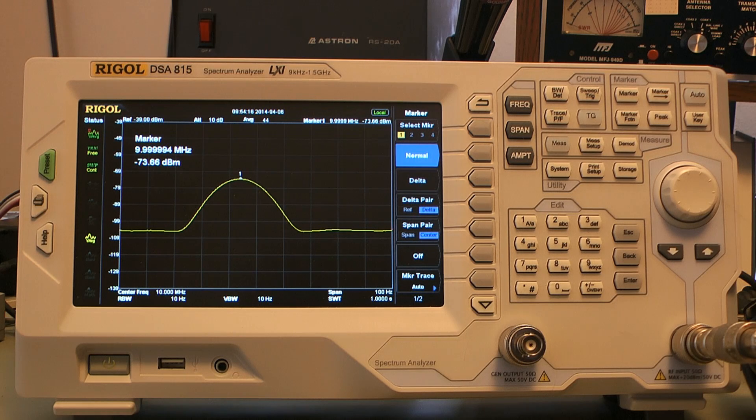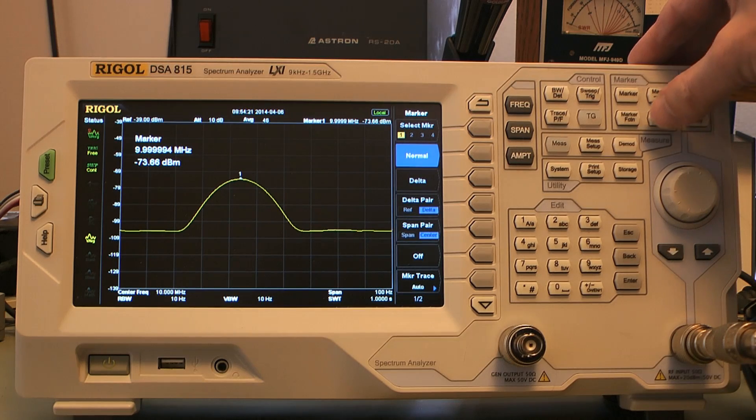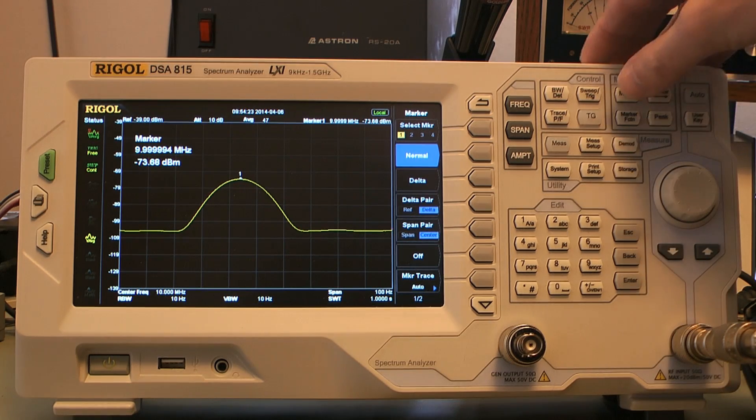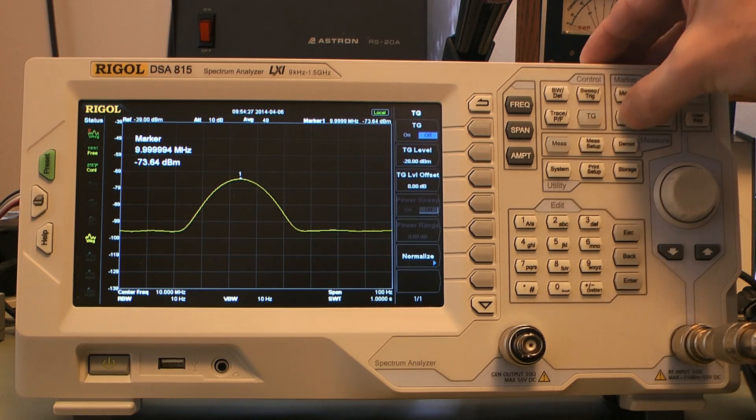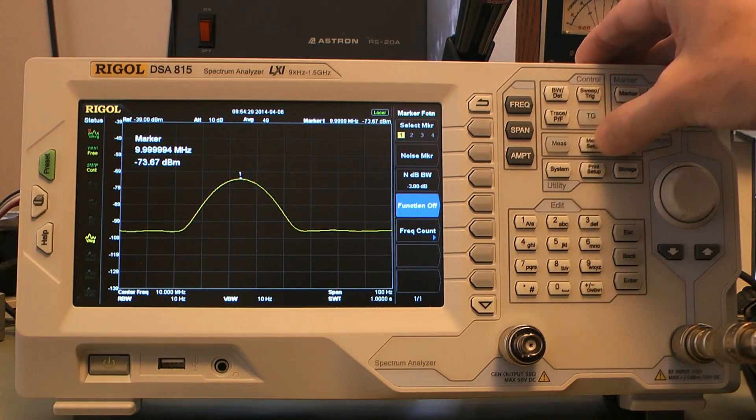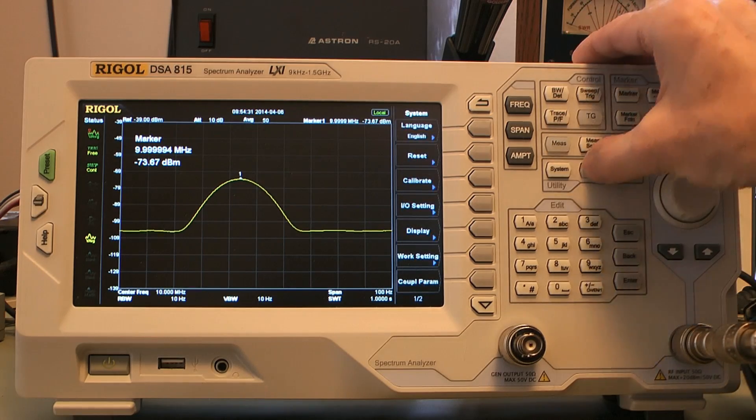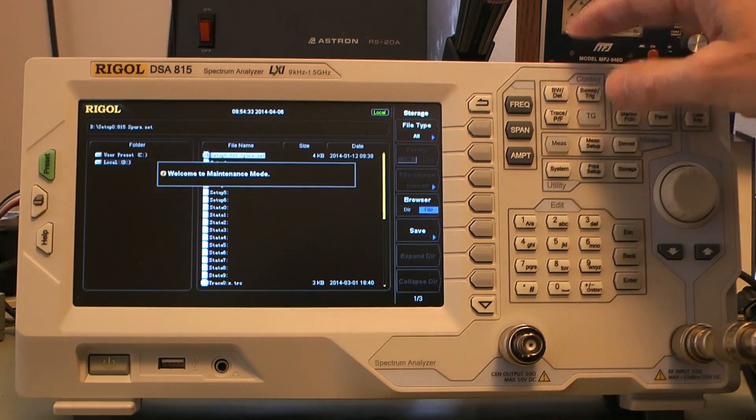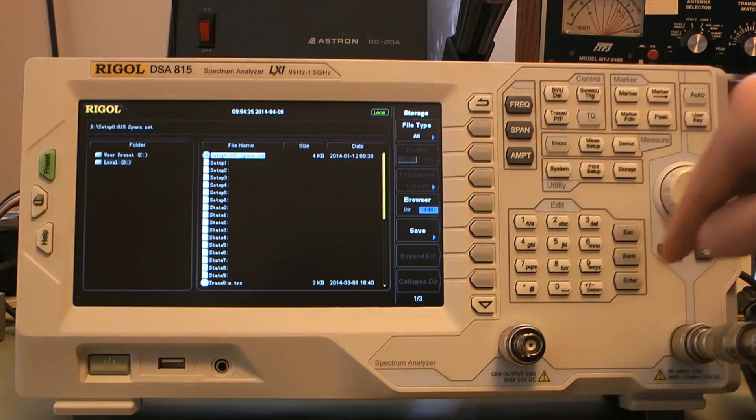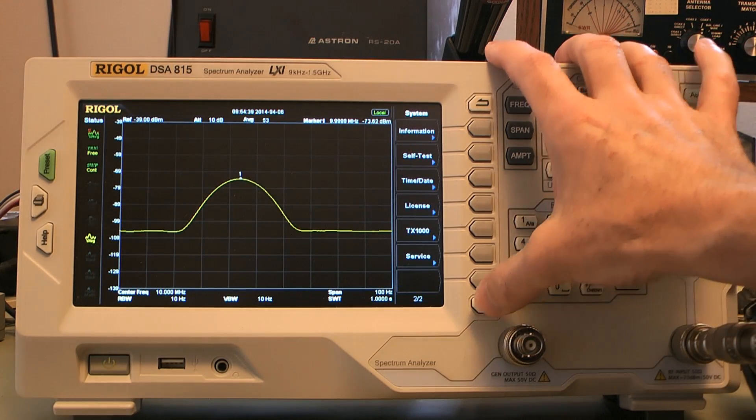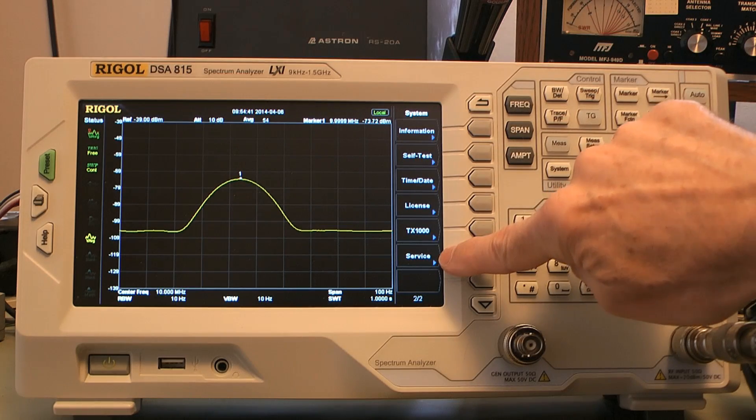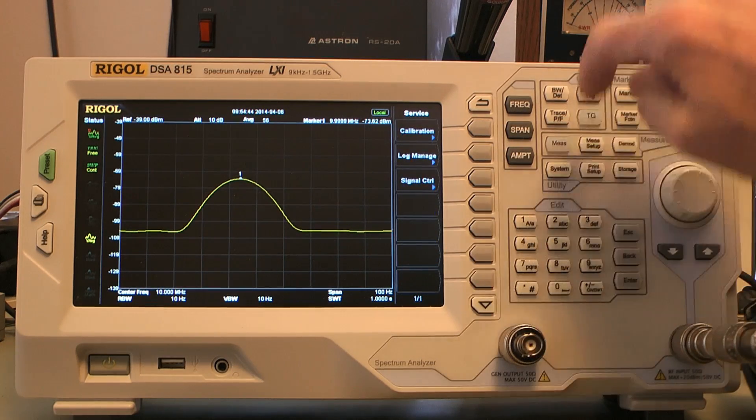Now let's figure out how to get the thing into maintenance mode. There's a pattern of keys that you push that takes it into maintenance mode. So it's trace, tracking generator, marker function, measure setup, system, print setup, storage. And you get a little message, welcome to maintenance mode. Now you can go to system, second page, and there's a new menu item on there called service. Click service, click calibration.